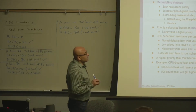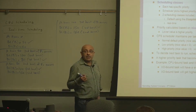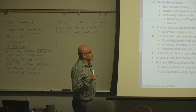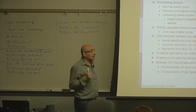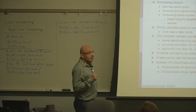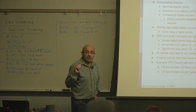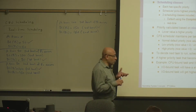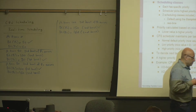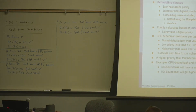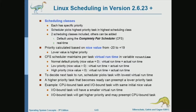The CFS scheduling algorithm is applied to processes that are in the normal or default category. There is another category which is real-time. So there are two main categories: real-time and normal processes. Real-time processes have the highest priority. Normal processes are scheduled using the CFS scheduling algorithm.